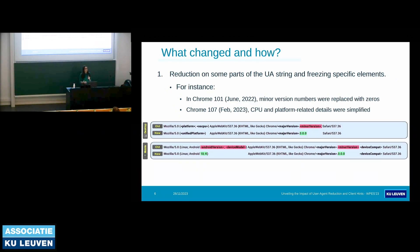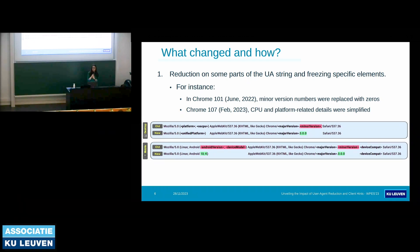Now I would like to explain what changed and how. Chrome's user agent reduction effort consists of three main steps. The first step is reducing the granularity of the user agent string and freezing some part of it. The minor version was replaced with zeros. Further, CPU and platform version were simplified for desktop browsers, and for Android browsers, platform version was replaced with a fixed number which is 10.